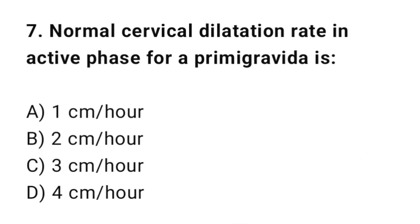Question number 7. Normal cervical dilation rate in active phase for a primigravida is? The correct answer is A: 1 cm per hour.